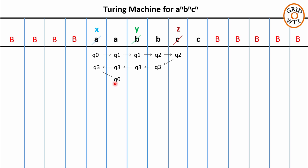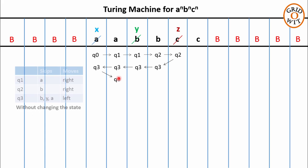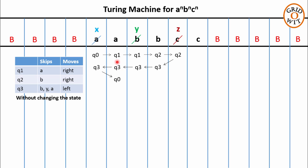q3 will skip the b, y, and a while moving towards the left. As soon as q3 reaches the symbol x, the Turing machine will realize it has moved one step extra, so q3 on reading x will take a right move and change its state to q0. We have reached the state where we started, meaning we have completed one iteration. In this iteration the Turing machine replaced the first a with x, first b with y, and first c with z. Let us take some observations from this first iteration before moving further.